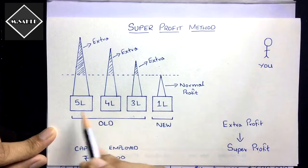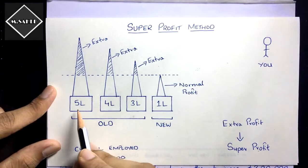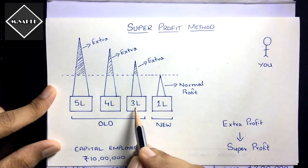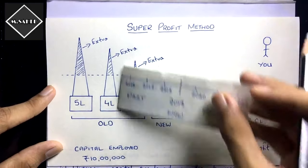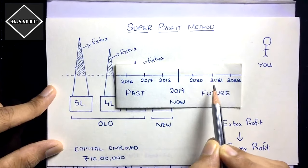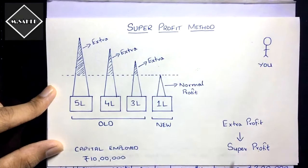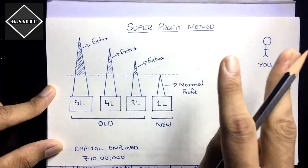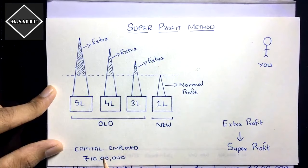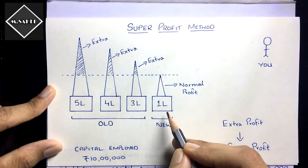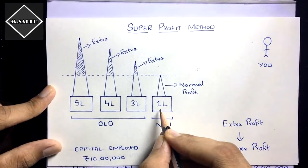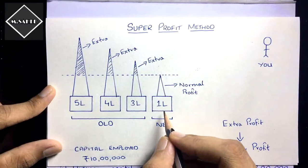If you go with the first option and purchase an existing old business, consider three old businesses earning profits of five lakh, four lakh, and three lakh respectively. These are good profit-earning businesses. With the second option, if you create a new business and invest, say, 10 lakh capital, you will earn only some minimum profit — say, 1 lakh.